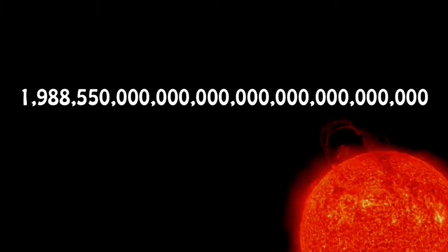Whether you use a number system with place value or one where symbols are sufficient, you might find it awkward to deal with extremely large or small numbers. This is the mass of the sun in kilograms. Is this symbol important here? No, of course it's not — this is like throwing a chicken at the sun. You can increase that to 3, and it's not going to affect the mass of the sun.